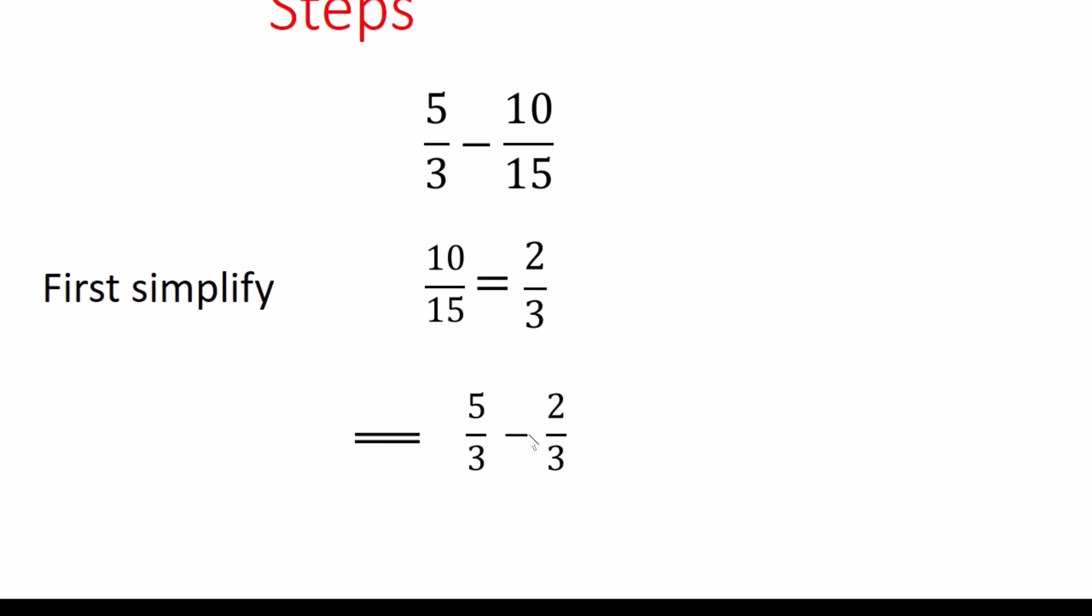So the new fraction of the problem became 5 divided by 3 minus 2 divided by 3. And the reason we did that, because we want to make 3 to be a denominator between those numbers.